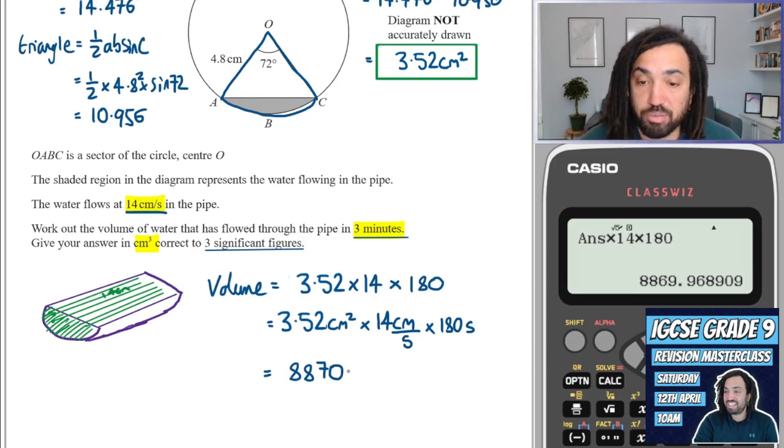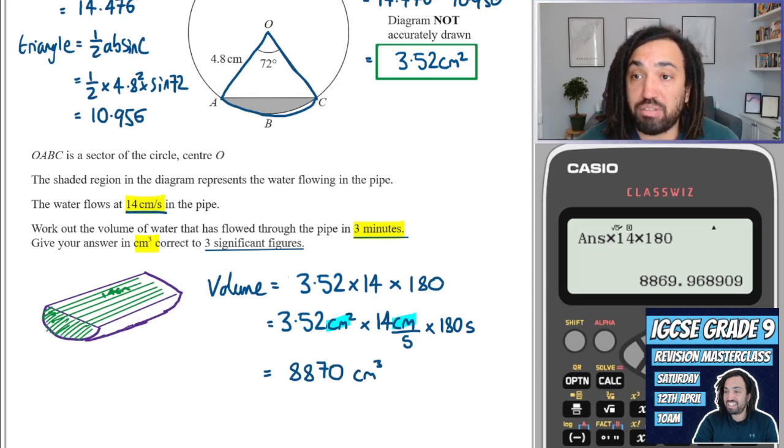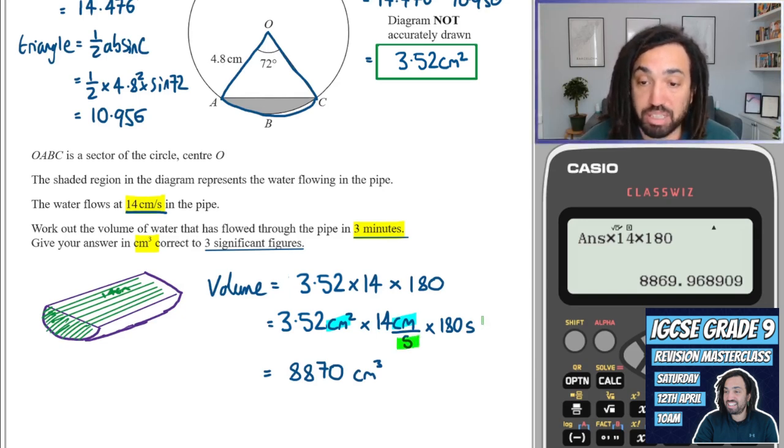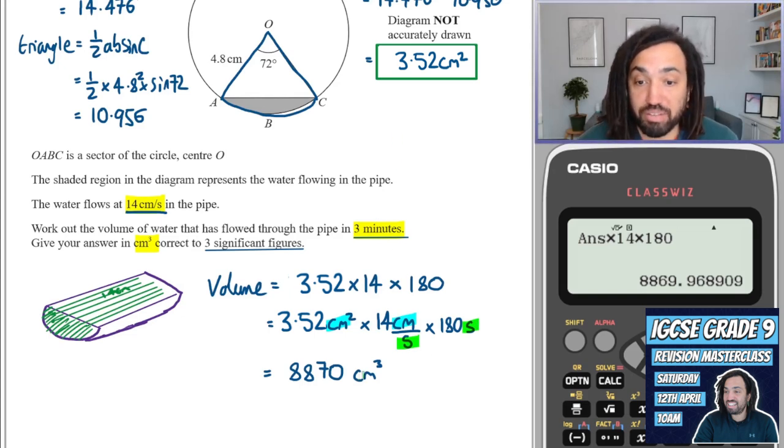So that, and then if we look at the units, we have centimetres squared times centimetres, which gives us centimetres cubed, and then we have divided by seconds and multiplied by seconds, which will cancel out. So we have the correct unit, so we know that we've done the correct multiplication of values.